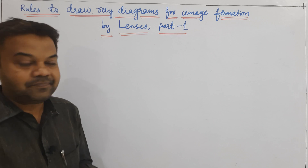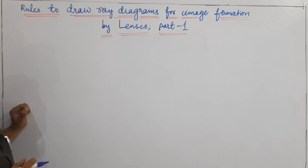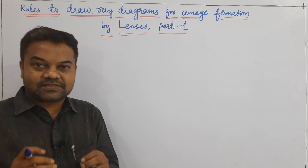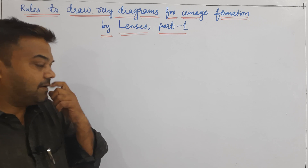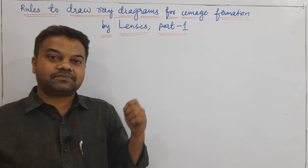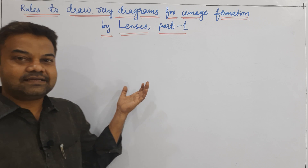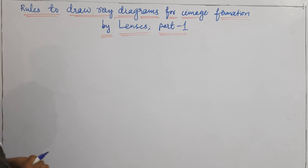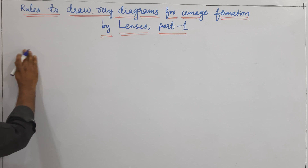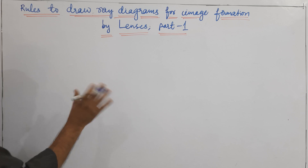Before going to draw ray diagrams, we have some rules — what are the rules we have to observe here. In general, we have 3 to 4 rules. We have to draw a ray diagram. Almost we have 6 ray diagrams.